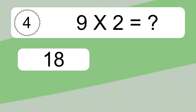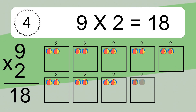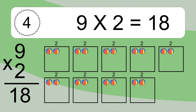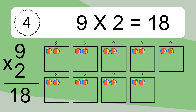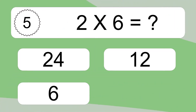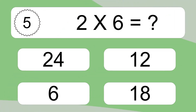9 times 2 equals what? 9 times 2 equals 18. We have 9 boxes, and each box has 2 colorful balls inside. If you count all the balls in all the boxes together, you will have 9 times 2 balls. This equals 18 balls.